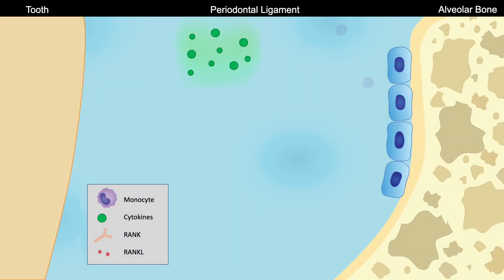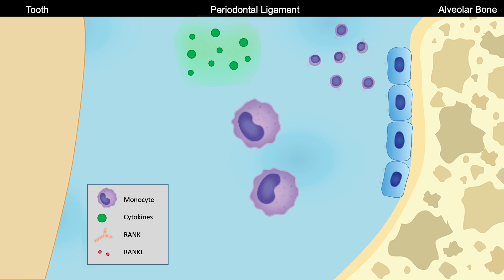These inflammatory markers, called cytokines, represent a wide spectrum of different molecules. Some of them are chemokines that recruit other cells into the area, such as monocytes or osteoclast precursor cells. Also, some of these molecules will act as anti-inflammatory molecules to control the inflammation so it does not get out of hand.